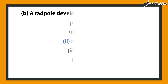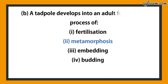Second part: a tadpole develops into an adult frog by the process of — options are 1) fertilization, 2) metamorphosis, 3) embedding, 4) budding. The answer is B, i.e. metamorphosis.